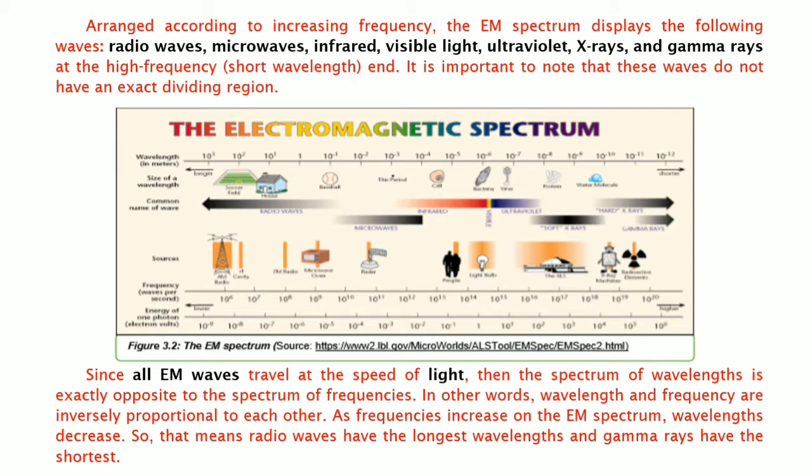Arranged according to increasing frequency, the electromagnetic spectrum displays the following waves: radio waves, microwaves, infrared, visible light, ultraviolet, x-rays, and gamma rays at the high frequency end. It is important to note that these waves do not have an exact dividing region. You can refer to the image being shown below.